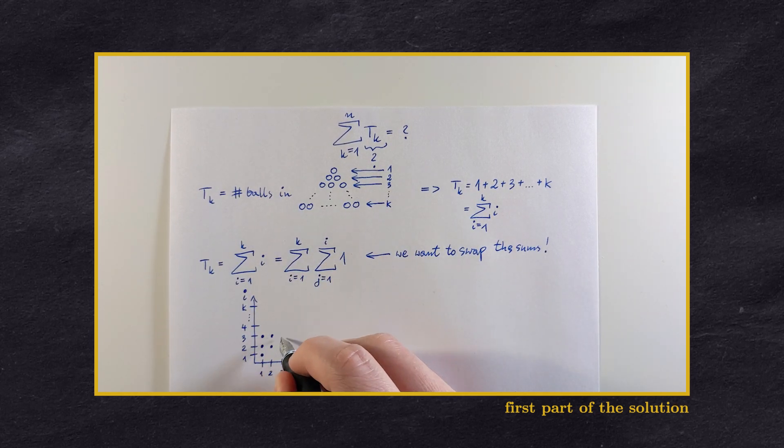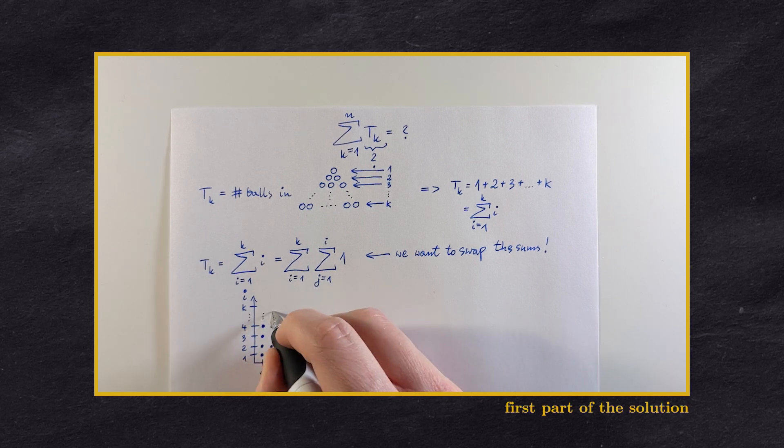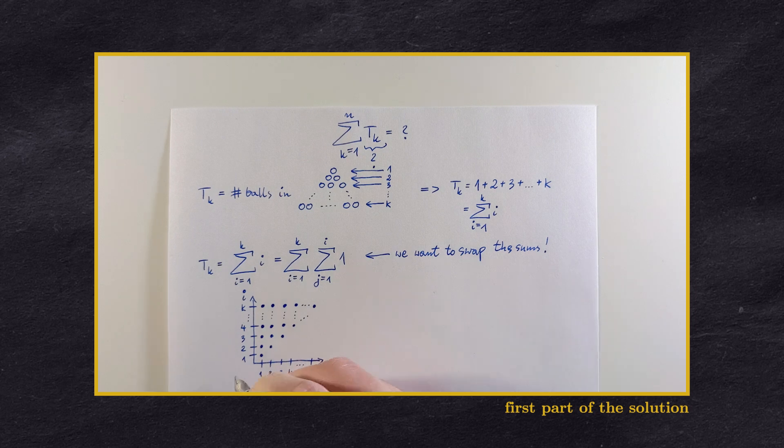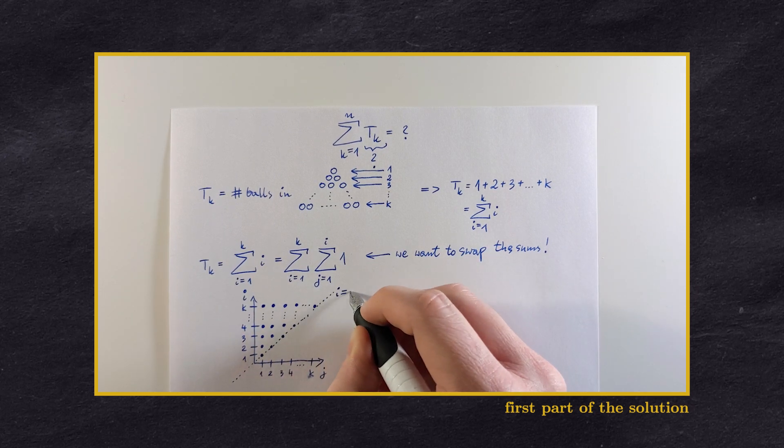These dots represent the pairs i, j that our double sum goes through. To switch the order, we need to reflect this graph over the i equals j line.